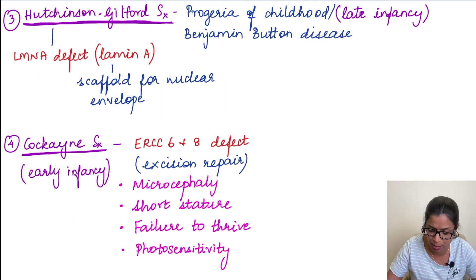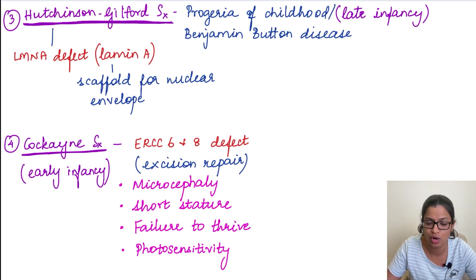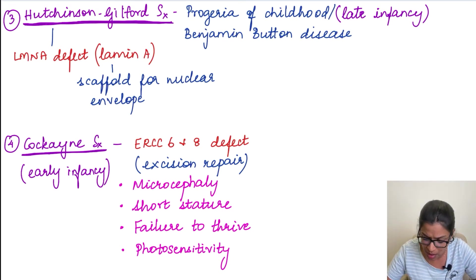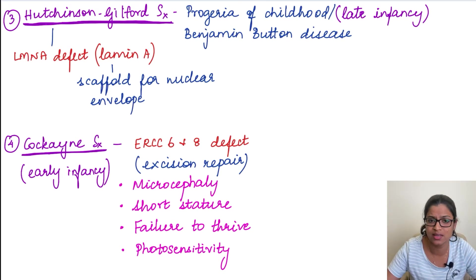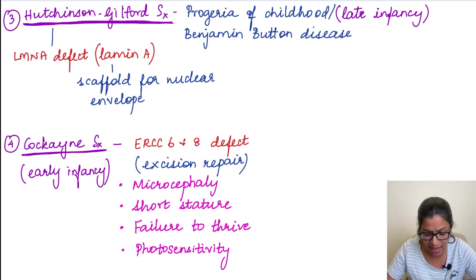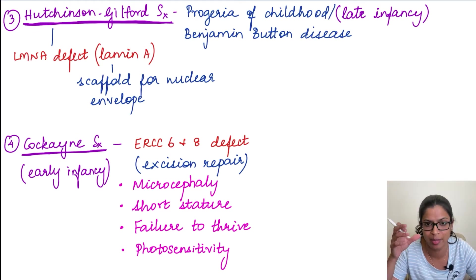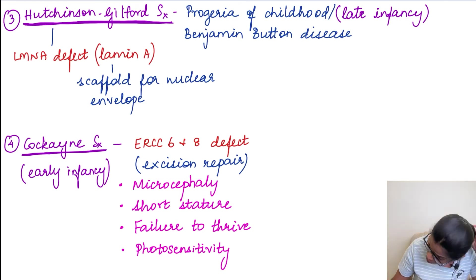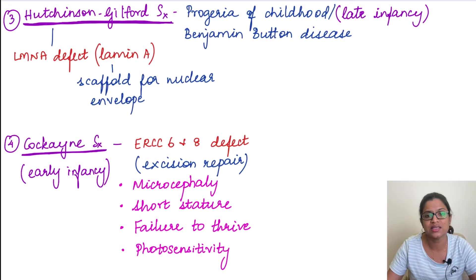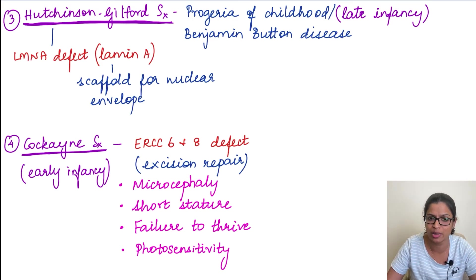The third example is Hutchinson-Gilford progeria syndrome, called the progeria of childhood — progeria literally means premature aging. The patient will typically be an infant in the later stages of infancy. This syndrome has also been called Benjamin Button disease, based on a movie. The gene defective here is LMNA, which codes for a protein called Lamin A. Lamin A is needed for maintaining the stability of the nucleus — it provides the nuclear envelope scaffolding. When Lamin A is defective, the nucleus will undergo breakage easily, the cell will die, and premature aging will occur.